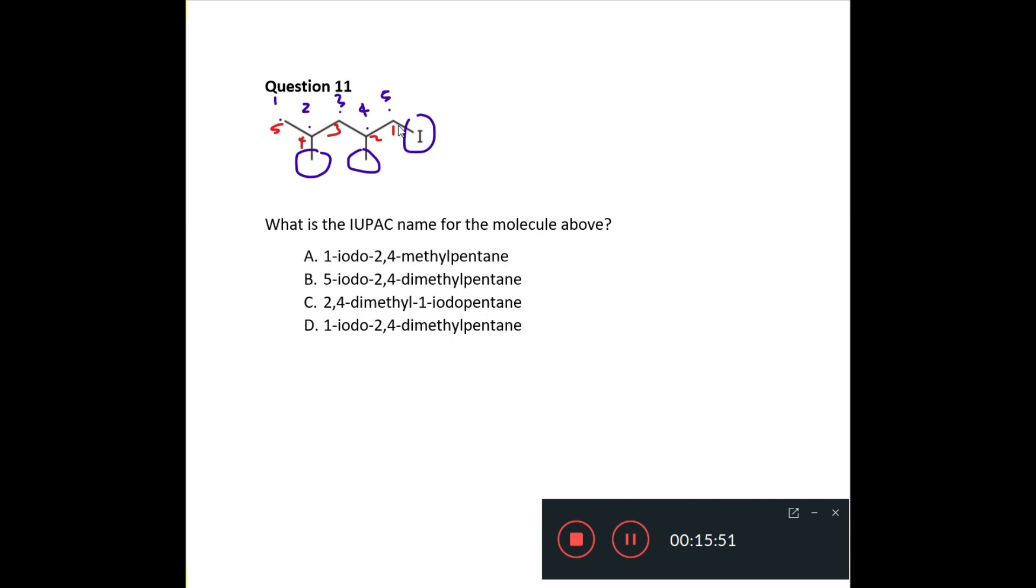If you look at A, it has one iodo and it has two, four methyl, but you need to say dimethyl because there's two of them. So, your answer is D, one iodo, two, four dimethyl. And the iodo comes before the methyl as placed in alphabetical order. So, C also has two, four dimethyl and one iodo, but the methyl should be after the iodo due to alphabetical order. So, your answer is D.